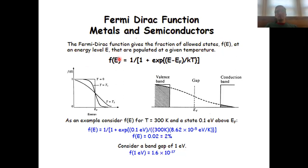The fraction of the allowed states is 1 over 1 plus the exponential of the energy of the crystal orbital that we look at minus the energy of the Fermi level, over kT.